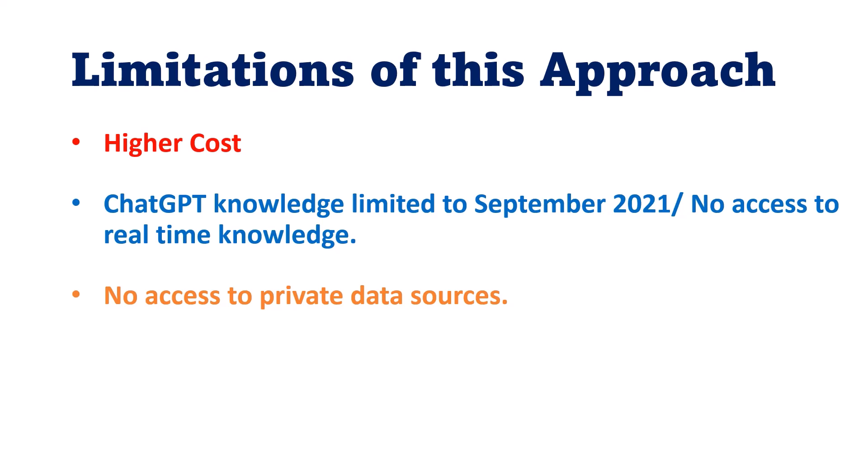If a startup is creating a product and faces funding issues, that is a problem because OpenAI API is not free — you have to pay to use GPT 3.5 or GPT 4 in your application. The second point is that GPT 3.5 and GPT 4 models do not answer questions about the latest events because they are trained on data only up to September 2021. They have no access to real-time knowledge, so if you want to incorporate the latest information from Google or Wikipedia, you cannot. For example, if you ask who won the World Test Championship 2023, ChatGPT or GPT 3.5 or GPT 4 will not be able to answer.